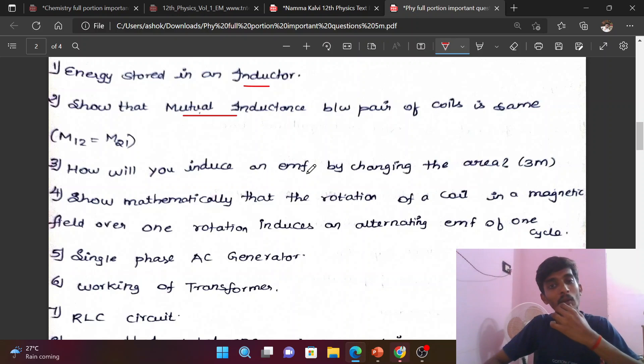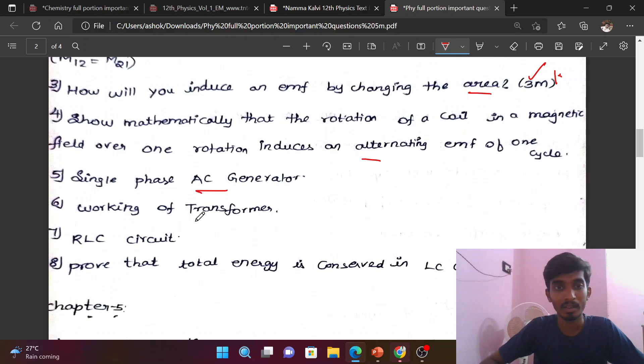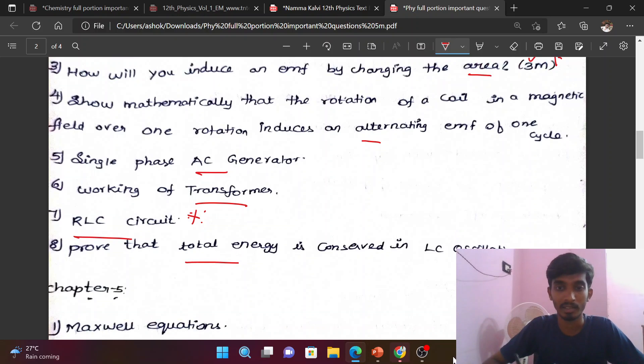Chapter 3: Magnetic field due to long straight conductor, circular loop, and EMF by changing the area - this is a 3-mark question but very important. Show mathematically that rotation of a coil in a magnetic field over one rotation. Single phase AC generator, transformer construction and working, RLC circuit, and energy conserved in LC oscillations.